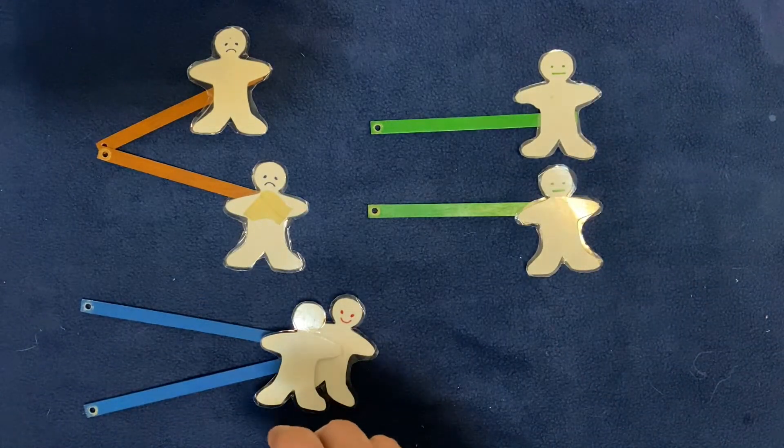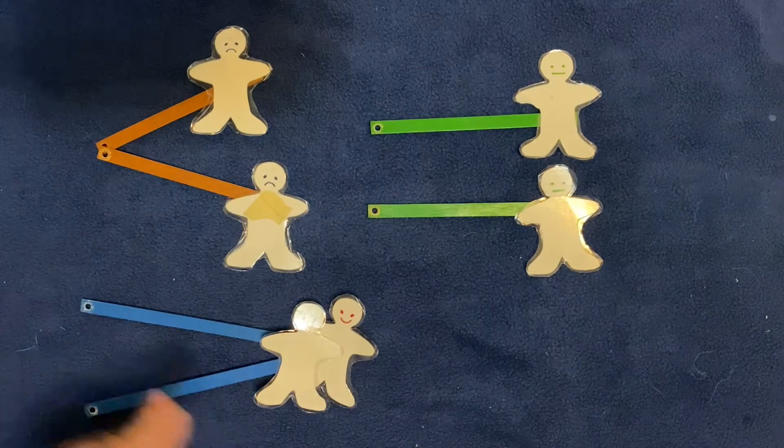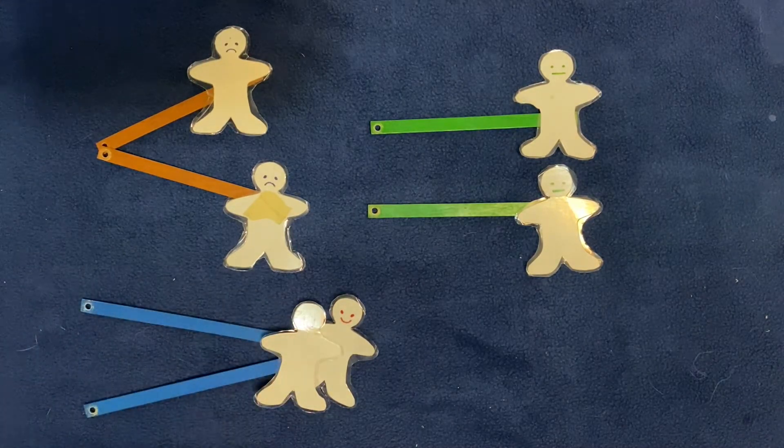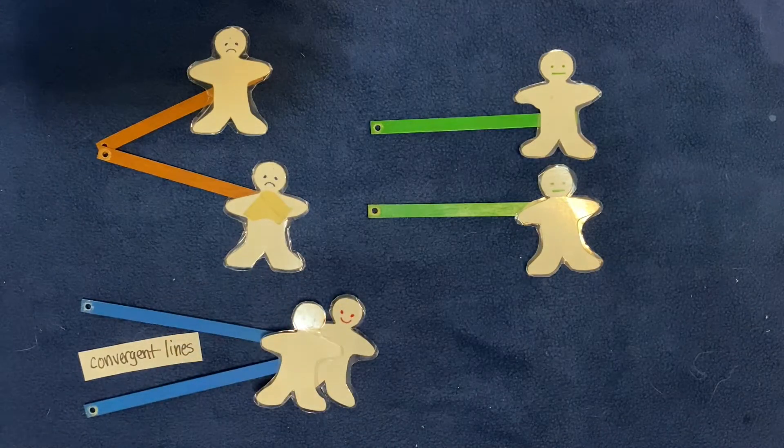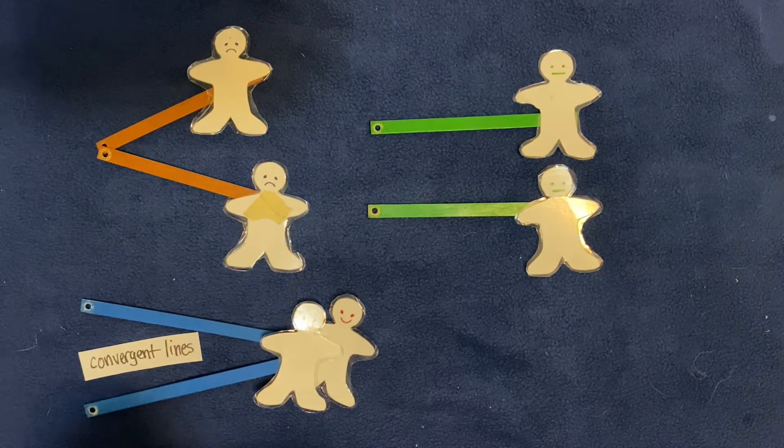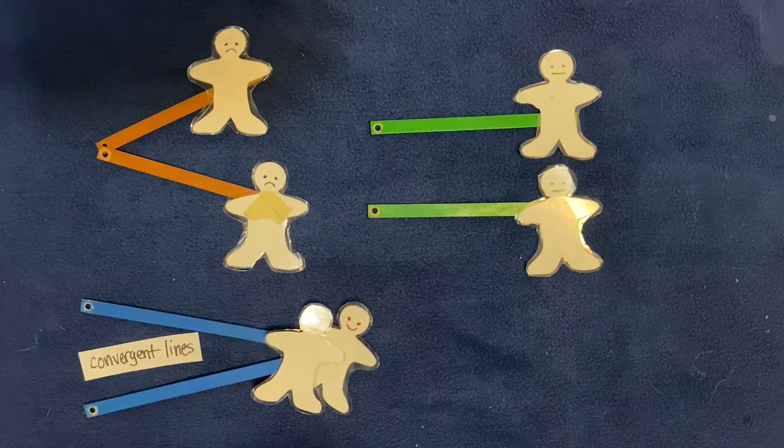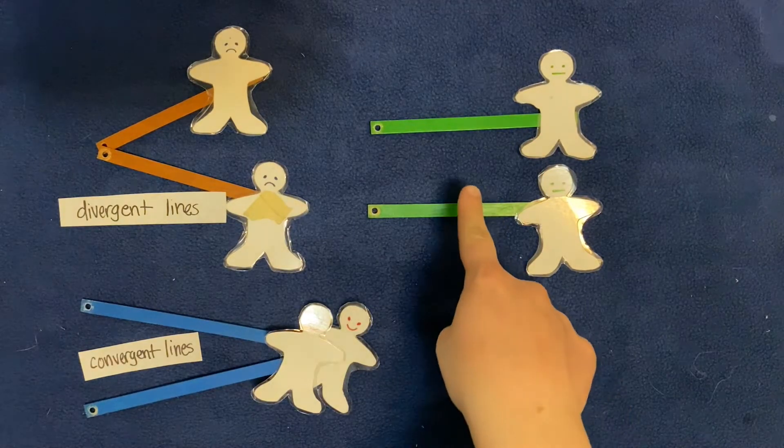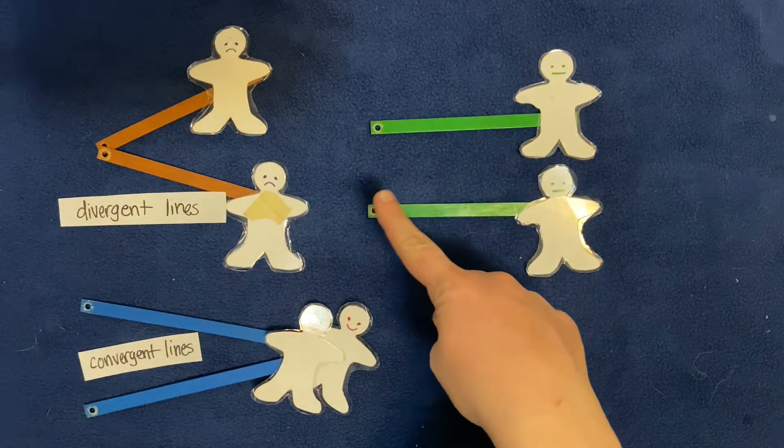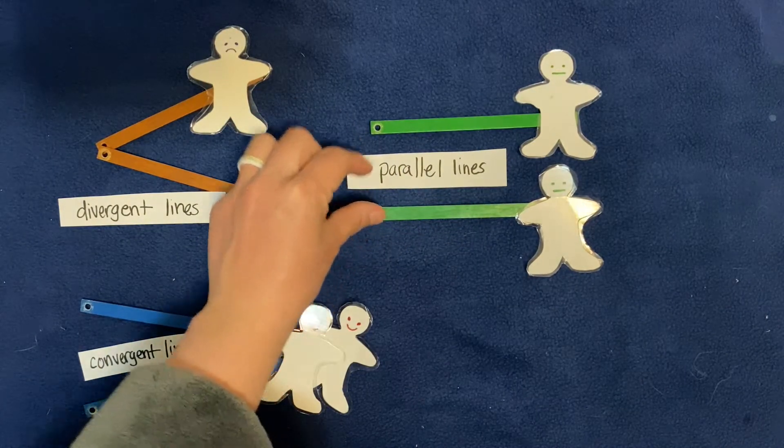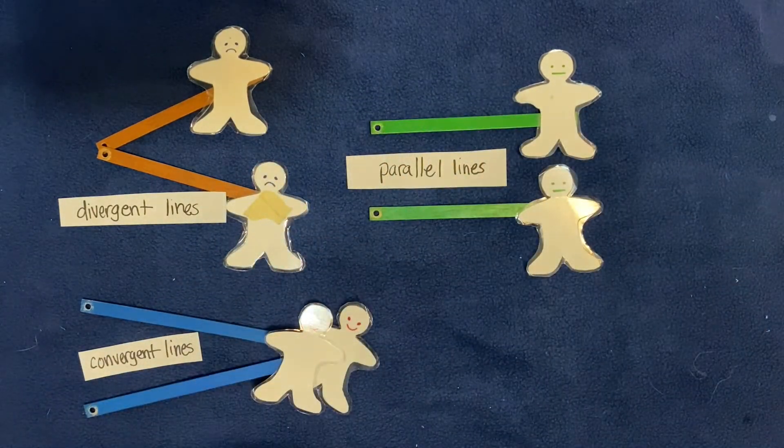So two lines that come together are called convergent lines, and two lines that go apart are called divergent lines. And two lines that go on and don't ever come in contact with each other and they're just perfectly right alongside each other are called parallel lines.